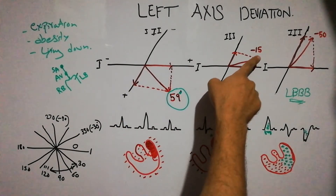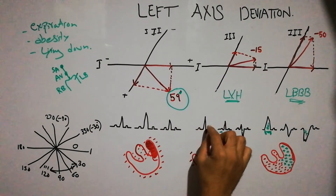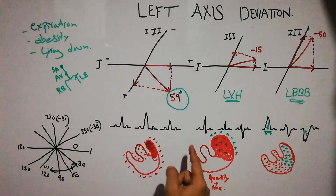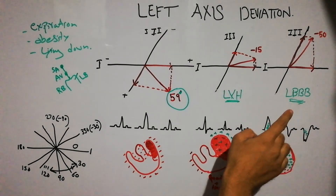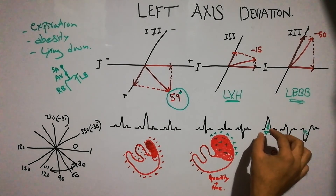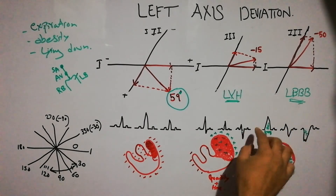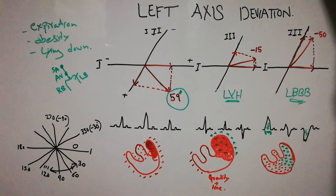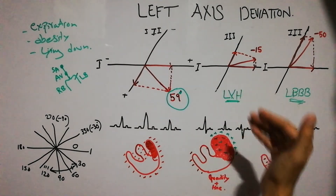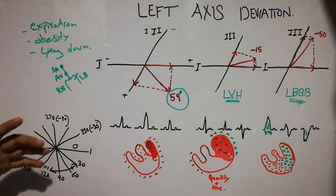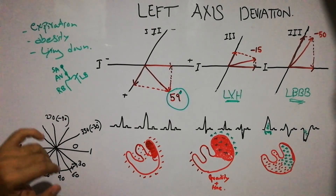In left ventricular hypertrophy, the vector shifts to about minus 15 degrees and the ECG appearance changes in lead 1, lead 2, and lead 3, with more time taken by the current toward the left side due to increased muscle mass. In left bundle branch block, the vector shifts to about minus 50 degrees, and the QRS complex in leads 1, 2, and 3 not only shifts but also increases in width because of the additional time taken by the current. In the next lecture we will discuss right axis deviation.